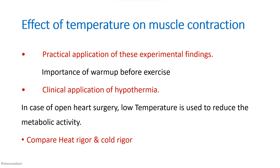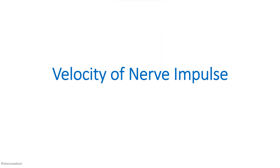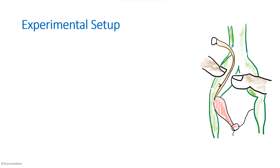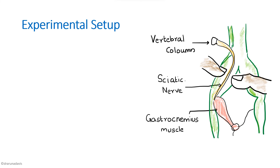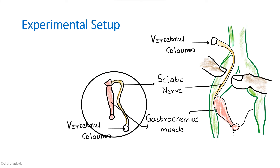The last experiment is the velocity of nerve impulse. The aim is to find out the velocity in the sciatic nerve of a frog. In an isolated nerve muscle preparation, the sciatic nerve has two ends: the vertebral end and the muscular end. We stimulate the sciatic nerve at both ends and find the time taken to travel the distance between them. Velocity is calculated as length divided by time, giving us the velocity of nerve impulse in the sciatic nerve.